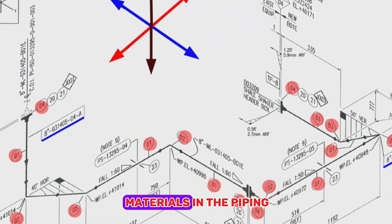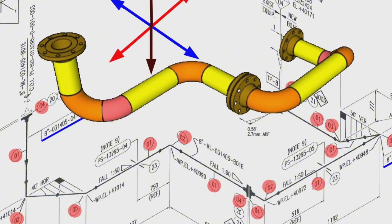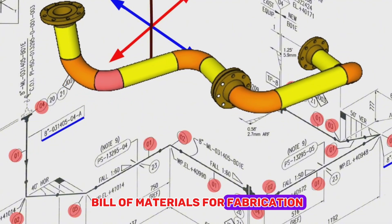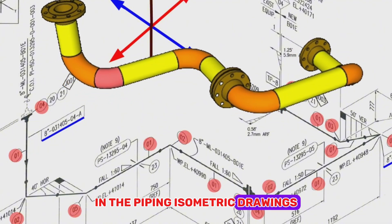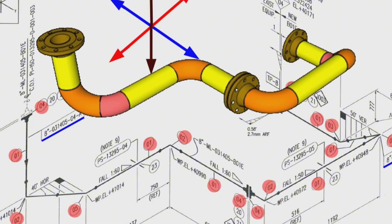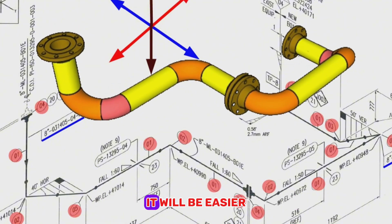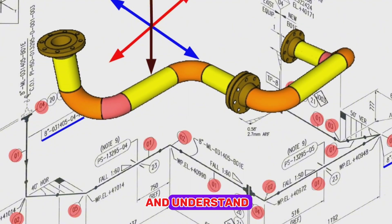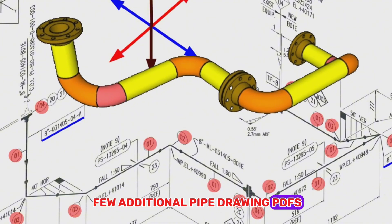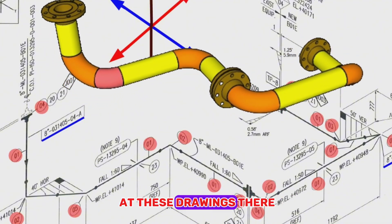Reading the Bill of Materials in the Piping Isometric Drawings has been successfully completed. By using this method, you can easily read the Bill of Materials for Fabrication in Piping Isometric Drawings. By watching the 3D model animation of this pipeline, it will be easier to read and understand the isometric drawing. I will leave a few additional pipe drawing PDFs in the description section of this video.